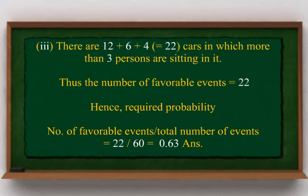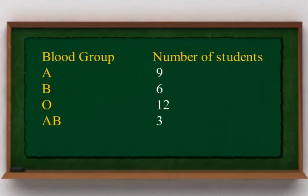There are 12 + 6 + 4 = 22 cars in which more than 2 persons are sitting. Thus, the number of favorable events is equal to 22. Hence, the required probability equals 22 divided by 60, which is equal to 0.63.